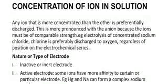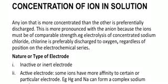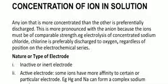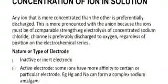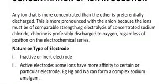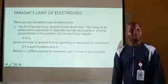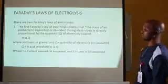Nature or type of electrode: there is the inactive or inert electrode, which does not participate during electrolysis. We also have active electrodes. Some ions have more affinity for certain particular electrodes — an example is the case of mercury and sodium, which can form a complex called sodium amalgam. Having set the factors that affect the preferential discharge of ions, we'll be going into the concept of Faraday's law of electrolysis.